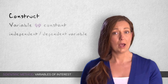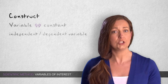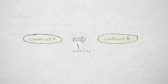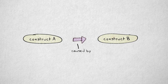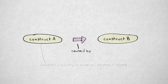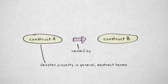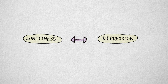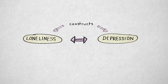A hypothesis describes or explains a relationship between constructs. The term construct is used to indicate that we're talking about a property in general, abstract terms. For example, I could hypothesize that loneliness and depression are associated. The terms loneliness and depression are the constructs here.